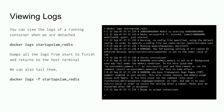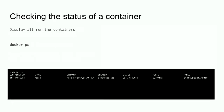If we want to look at running containers, we can use `docker ps`. In Linux you can run `ps` to show running processes; Docker has an analogous command called `docker ps` that shows your running containers. In this case, we have one called `startup_slam_redis`, which makes sense because that's what we're running.